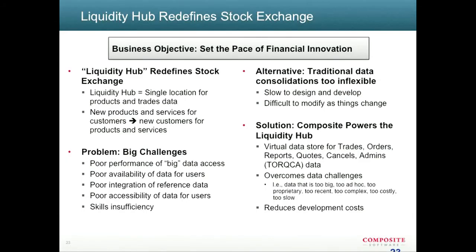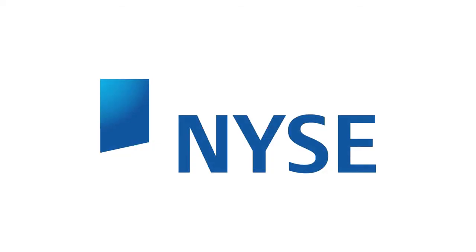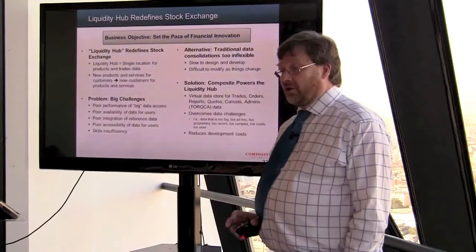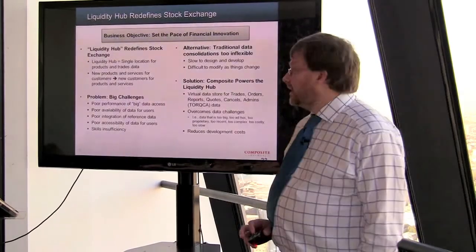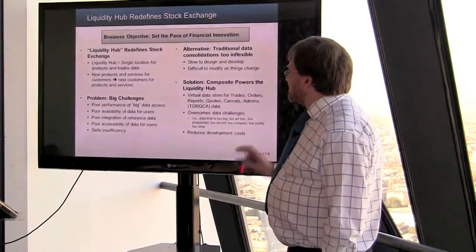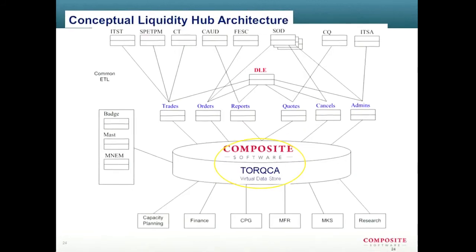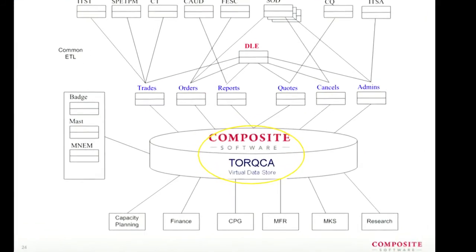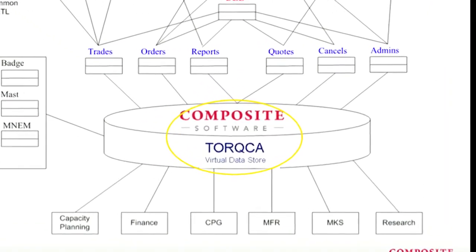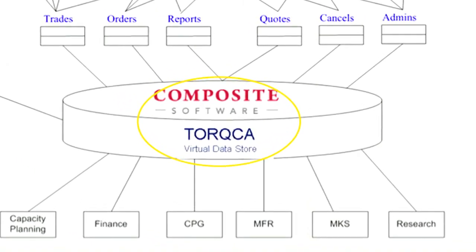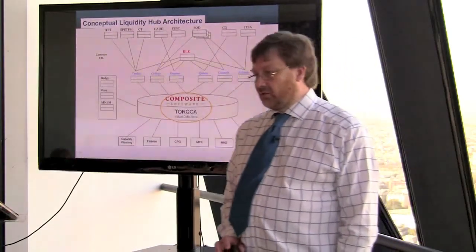There is actually a real story behind this — it's the New York Stock Exchange. They wanted to build a liquidity risk hub. These are some of the challenges they faced, essentially around the complexity of the data coming from different sources and also the timeliness of that data. They looked at multiple ways of doing this and finally chose to base that whole virtualization platform on a virtual solution using Composite software.